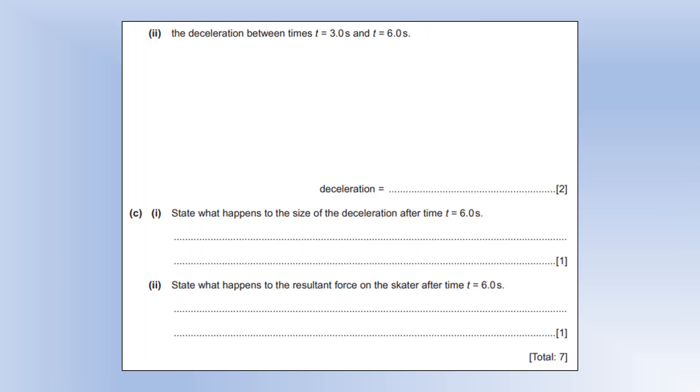Find the deceleration between those two. Average acceleration is given by this equation here. So we do final speed minus the initial speed divided by the time taken. That gives us minus 2. So the deceleration is 2 metres per second squared. We get rid of the negative sign.